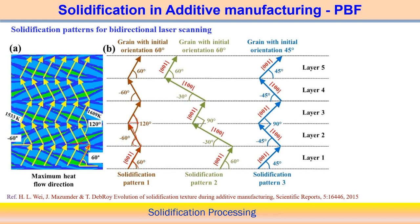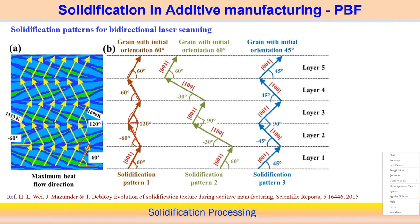In this case, the expected solidification pattern shows the maximum heat flow direction. However, it is not always actually oriented with reference to the preferred growth direction — it may not be following solidification pattern one. It may not be possible for bidirectional scanning to exactly follow solidification pattern one.